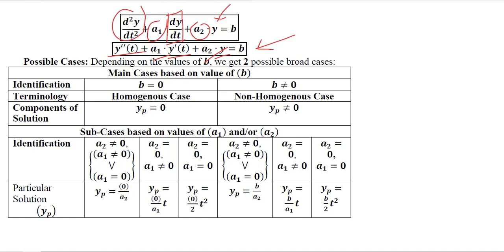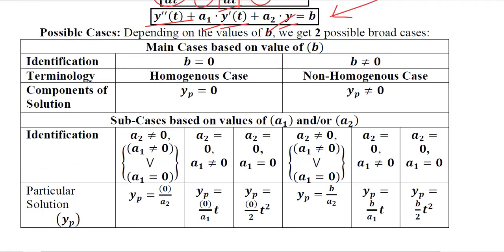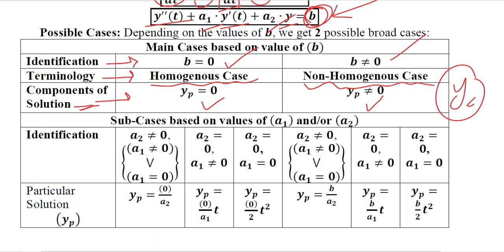We should now compare the particular integrals of the second order differential equation. The basic concern is whether we are dealing with a homogeneous case or a non-homogeneous case. When b equals 0 there is a homogeneous case; otherwise it is non-homogeneous. The components of the solution are yp (particular integral) and yc (complementary function). In the homogeneous case yp equals 0, and in the non-homogeneous case yp is not zero. Right now we are focusing on the particular integral.